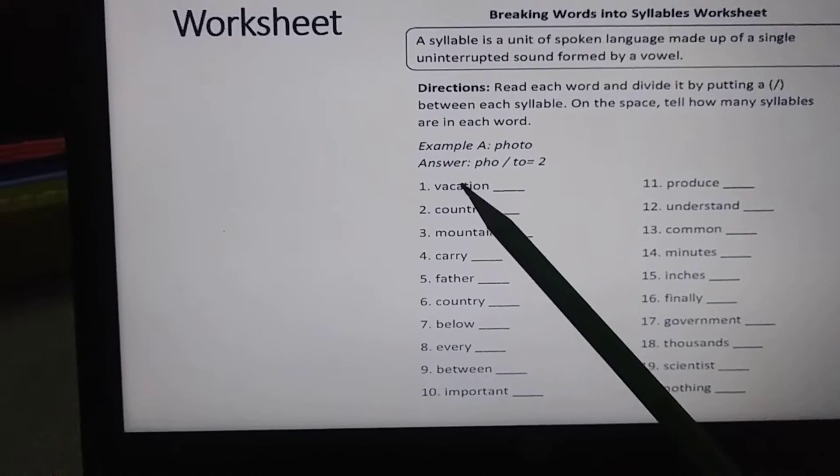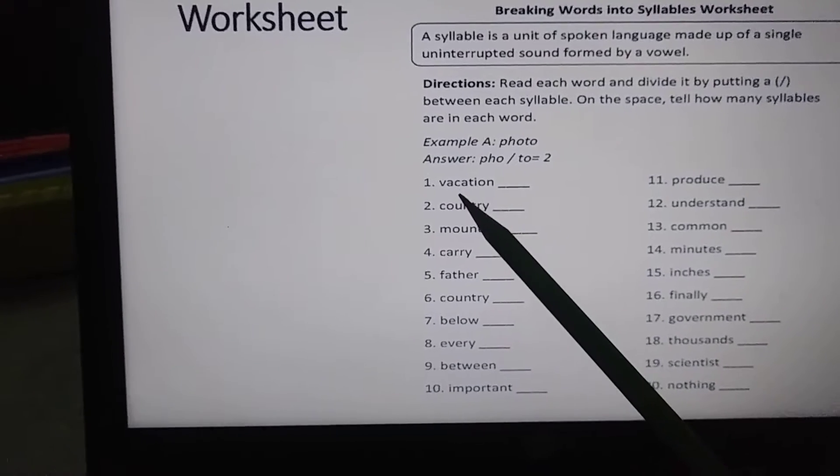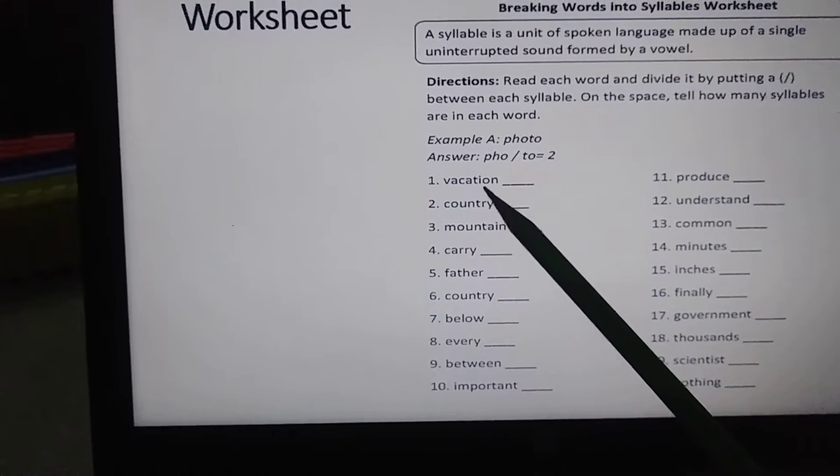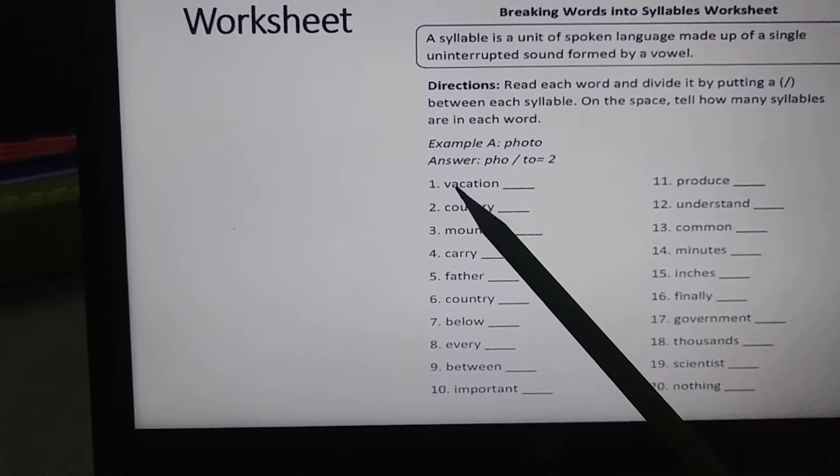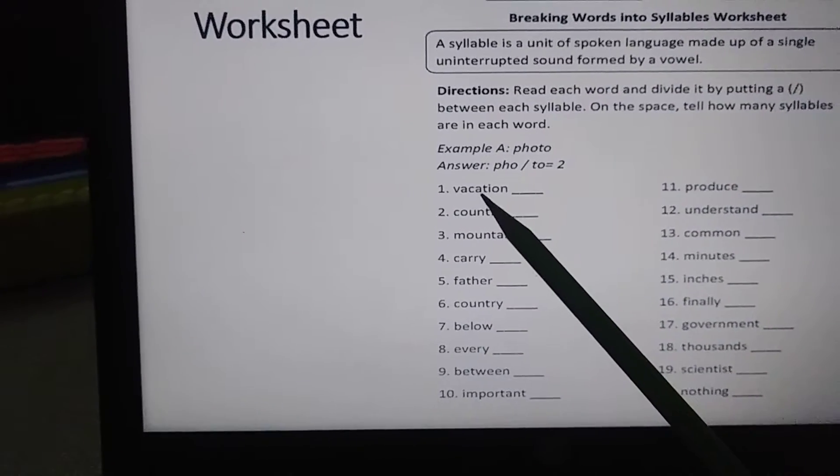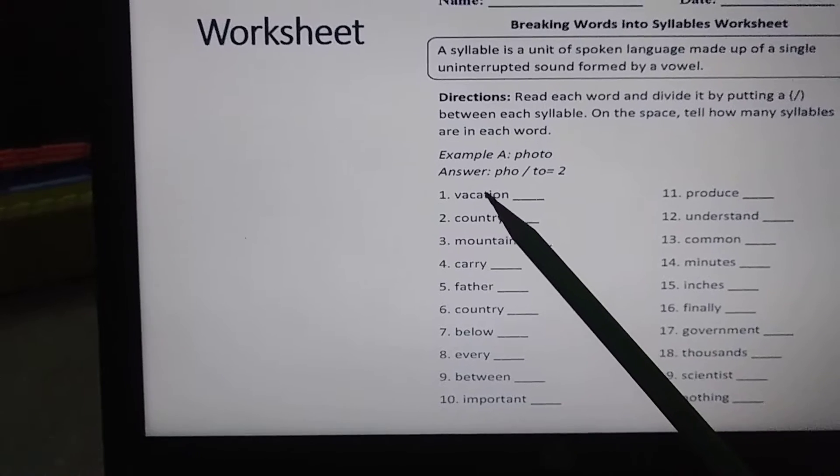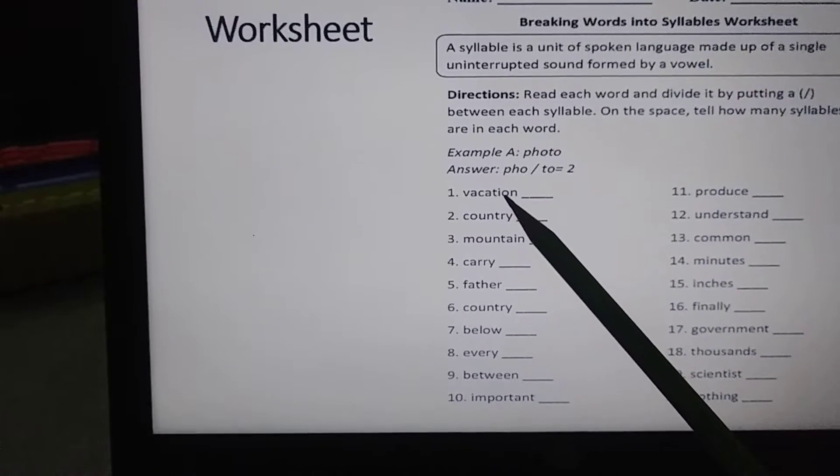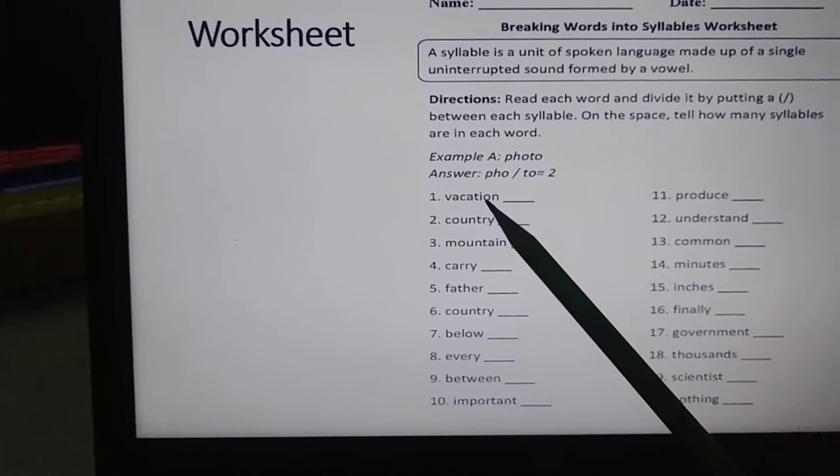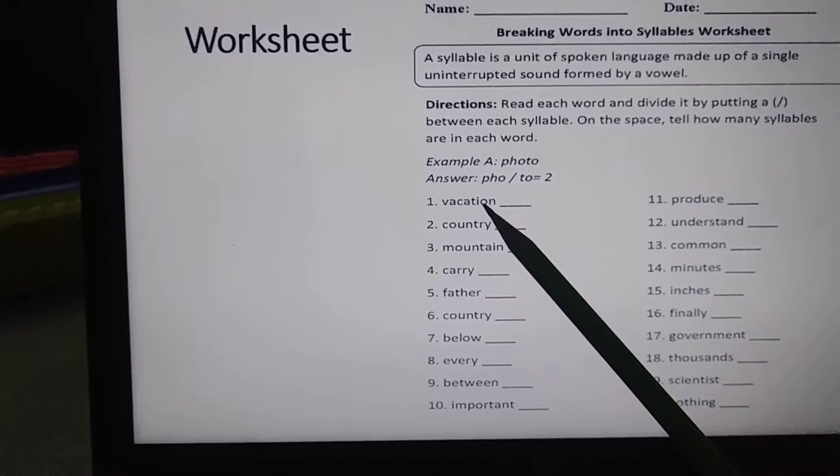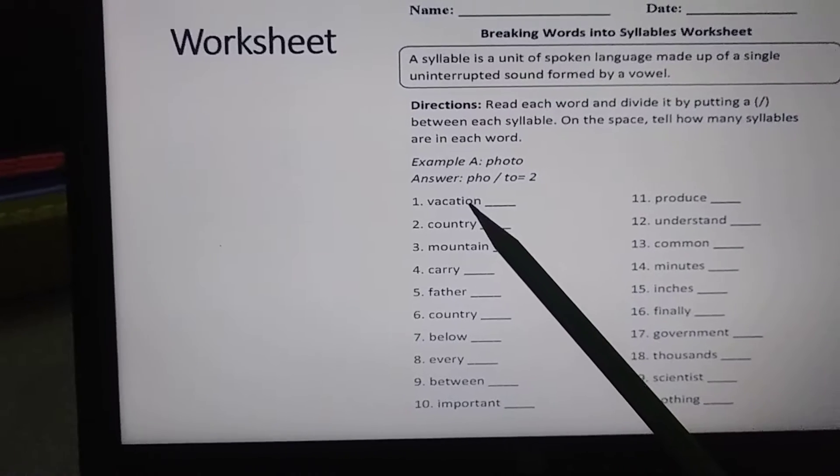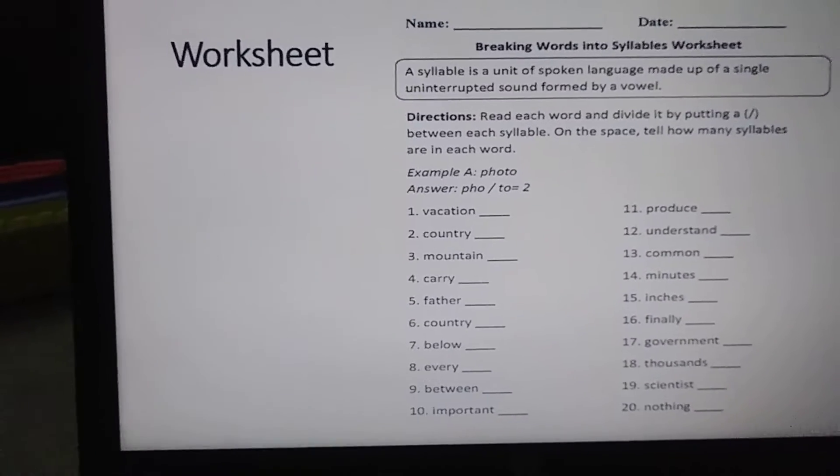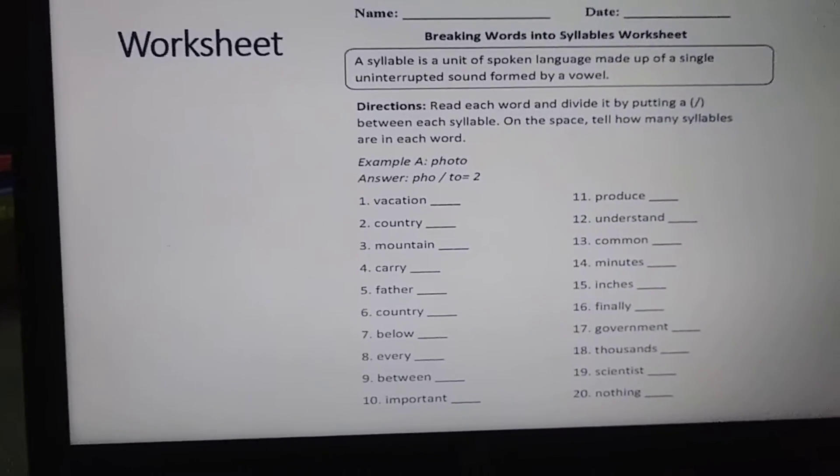The next one you have to do is vacation. See, there is one vowel, there is two vowel, there is three vowel, there is the fourth vowel. So how many syllables are going to be over here? Yes, four. This is the way you are going to solve this.